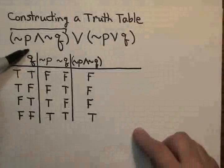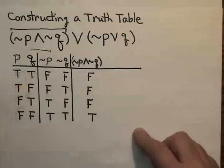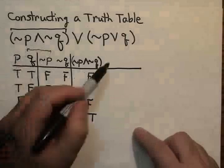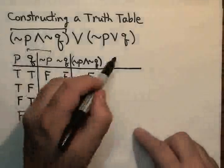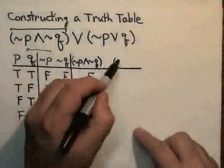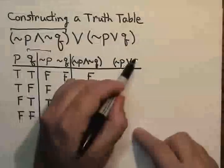So I'm looking actually at these two columns here. Now, I'm going to write that down. I need a not P or Q.